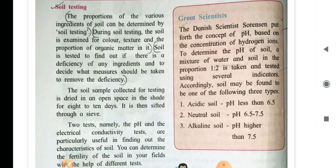The soil sample is collected for testing. It is dried in an open space in the shade for 8 to 10 days. It is then sifted through a sieve. Sifted means it is filtered through a sieve. Two tests, namely the pH and the electrical conductivity tests, are particularly useful in finding out the characteristics of soil. You can determine the fertility of the soil in your fields with the help of different tests.